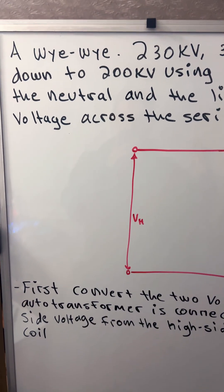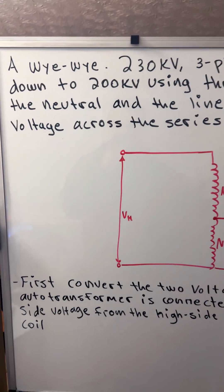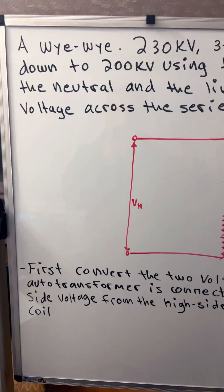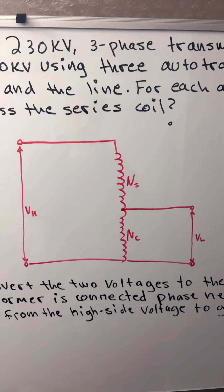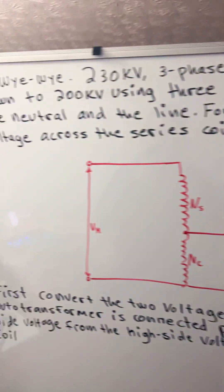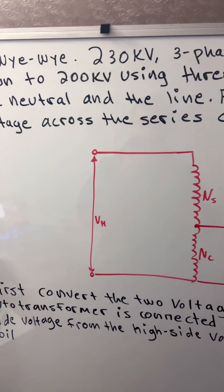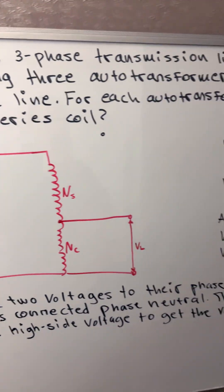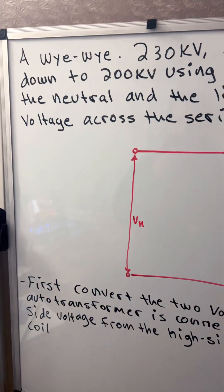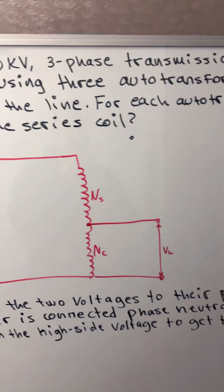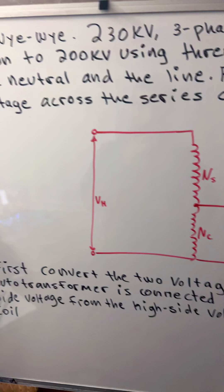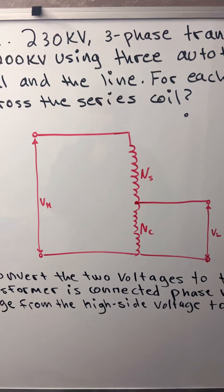Hello everyone, today I'm going to show you a transmission line problem. The problem goes like this: A wye-wye 230 kV three-phase transmission line is being stepped down to 200 kV using three auto transformers connected between the neutral and the line. For each auto transformer, what is the voltage across the series coil?